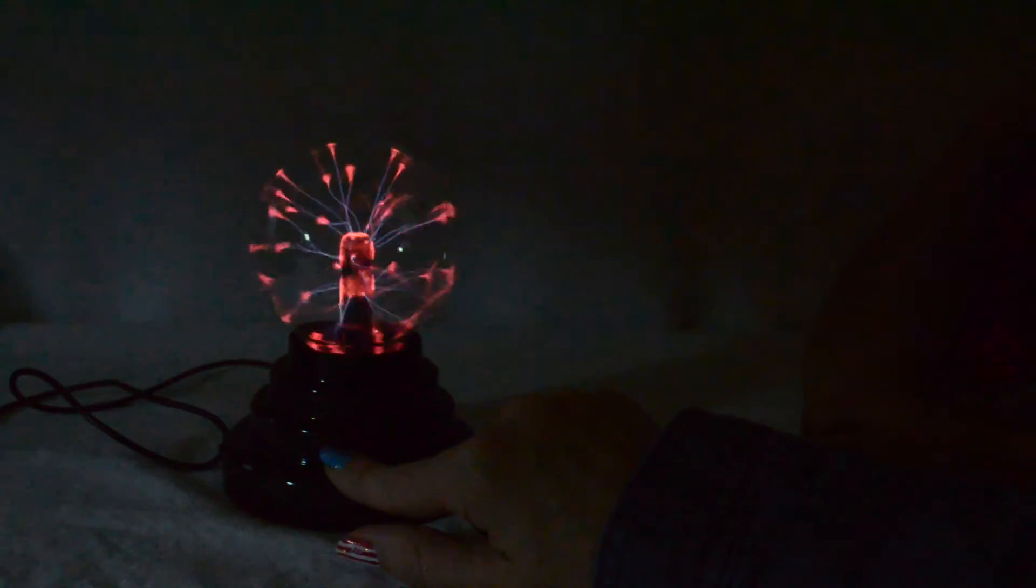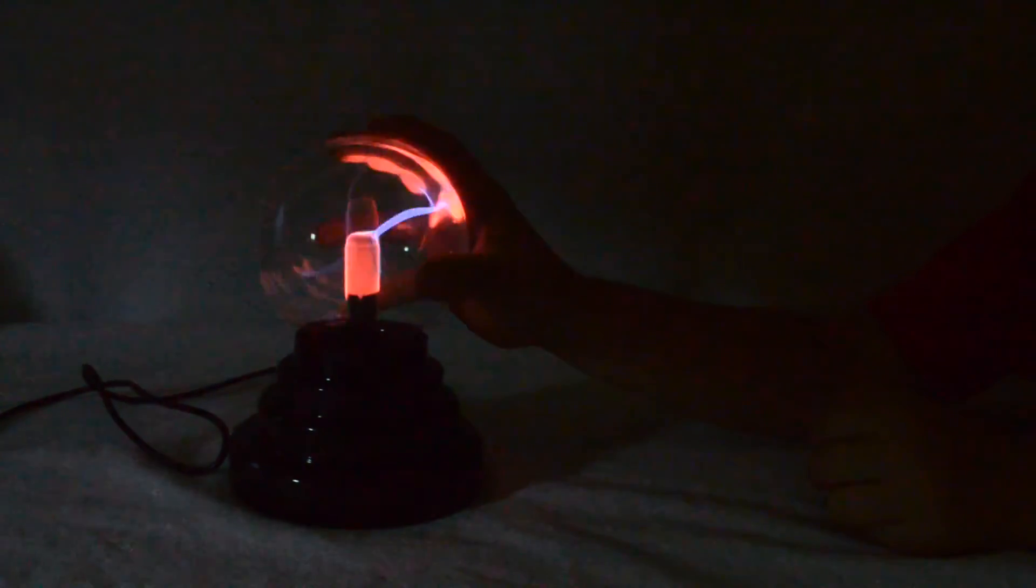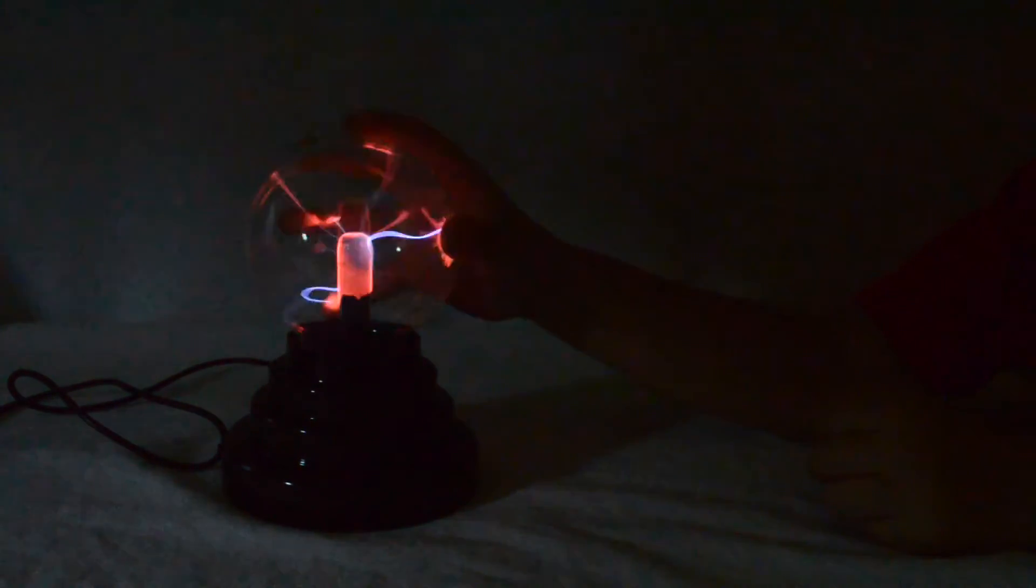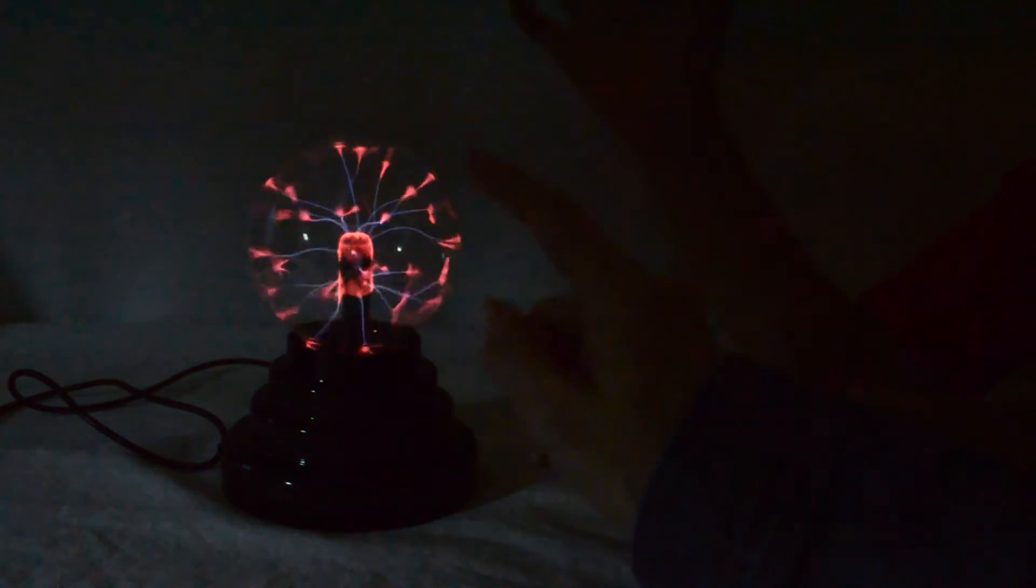Now we can see it. The base of the plasma ball creates a force that knocks electrons off the gases inside the glass. The gases become charged and become a plasma that you can see as these streamers of light. Lightning is a plasma, so each streamer is like a mini lightning bolt.